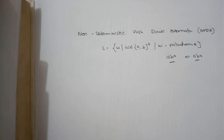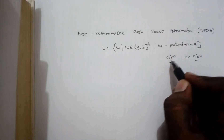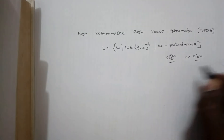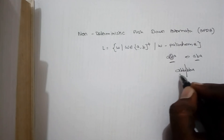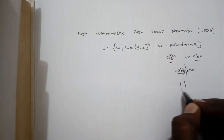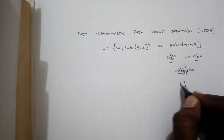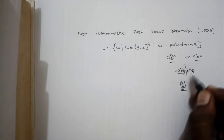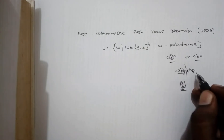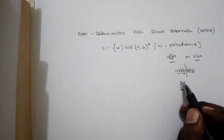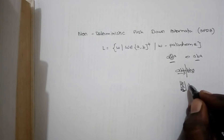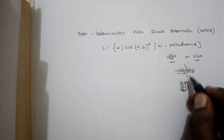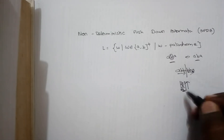We are going to follow the same procedure as for the deterministic push-down automata. Consider an input like ABBBA. We split the input into two halves — the first half we push into the stack. Till the middle element we push elements into the stack, and after the middle element the remaining input will be the reverse of what's in the stack. We can then compare and cancel matching elements.